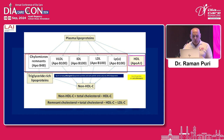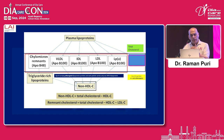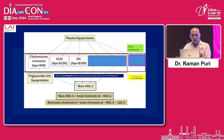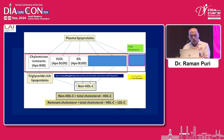The other particle is HDL — we all know it is an ApoA-containing particle responsible for reducing atherogenesis. The cholesterol content of all these particles taken together is total cholesterol. If I subtract HDL cholesterol from total cholesterol, what I get is non-HDL cholesterol — that is total cholesterol minus HDL cholesterol. And if I further subtract the cholesterol content of LDL and lipoprotein(a), what I get is remnant cholesterol — which is non-HDL cholesterol minus LDL cholesterol.